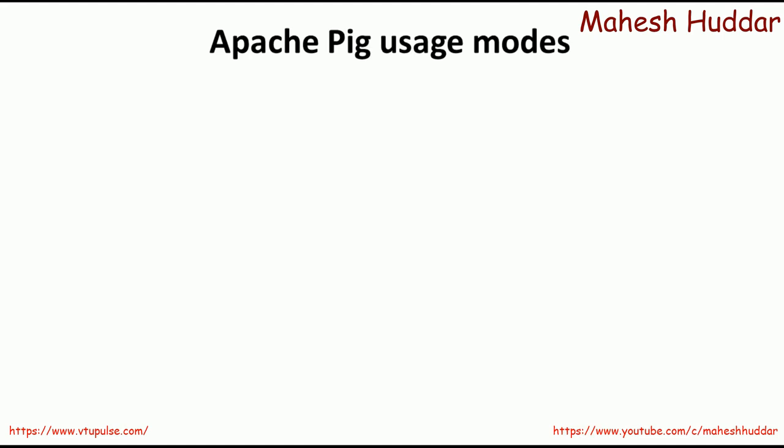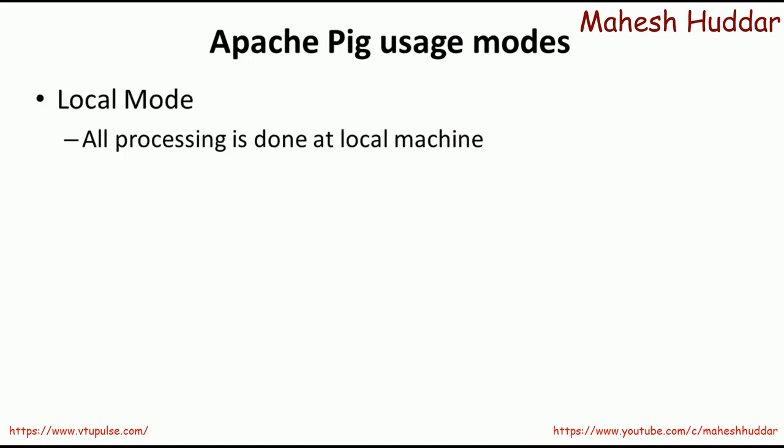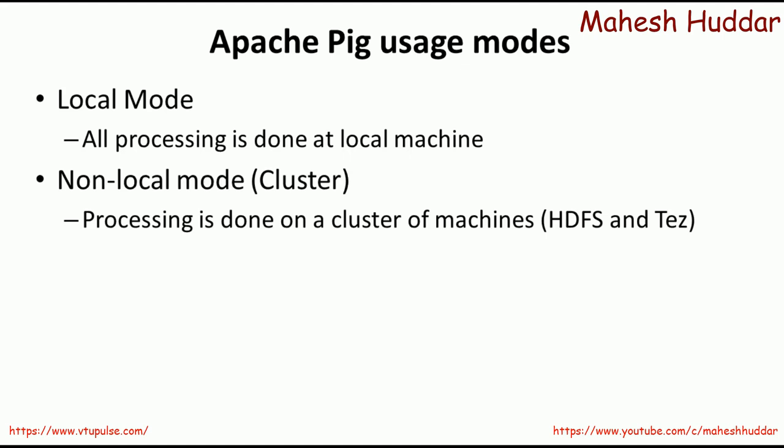What are the modes in which we can use Apache Pig? We can use Apache Pig in local mode, where all the processing is done on the local machine. There is nothing like HDFS or a cluster of machines — everything is executed on the local machine. You can install it on a local machine and run your scripts there. The second one is non-local mode, or cluster mode, where the processing is done on a cluster of machines. We can put our data into a cluster and run our Apache Pig program on it.